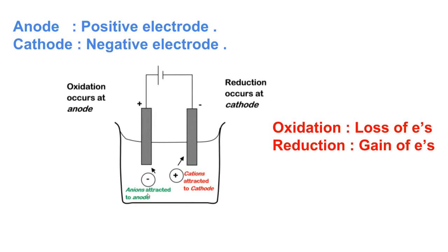In the diagrammatic representation of electrolysis, these are the anions — negatively charged particles — and these are the cations — positively charged particles. You can remember this by the letter 'n': anions are negatively charged. Since opposite charges attract, anions are attracted towards the positive electrode, which is the anode, and cations are attracted towards the negative electrode, which is the cathode.